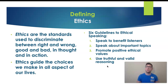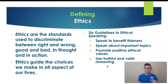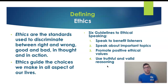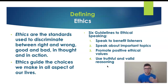The fourth guideline is to use truthful and valid reasoning. We want to make sure that the sources we use are true, correct, and not biased. You're going to have an entire lesson planned for evidence in week five, right before we go over informative speaking. I like to use Game of Thrones for that. You'll learn how to evaluate your sources to make sure that the evidence you're using is truthful and well-reasoned.